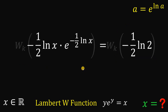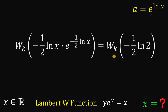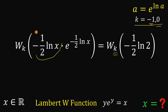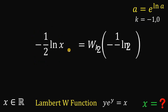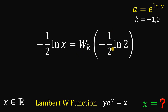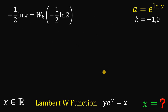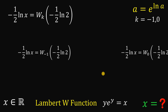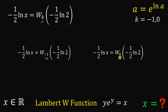Let's apply the Lambert W function on both sides. Taking W_k on both sides, where k is −1 or 0 since we have two possible values, the left-hand side becomes −(1/2)·ln(x), and it must equal W_k(−(1/2)·ln 2). Since we can't solve this with a simple calculator, we'll use Wolfram Alpha, replacing k with −1 and 0.